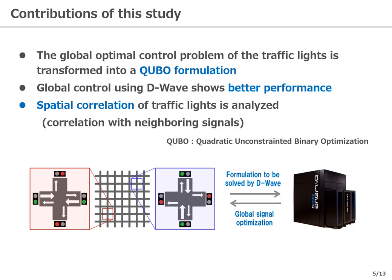The contribution of this study is that the global optimal control problem of the traffic lights is transformed into a QUBO formulation. It will be shown that this global control using D-Wave shows better performance in some parameter range. We also analyze the spatial correlation of traffic lights, and the importance of cooperation is confirmed.